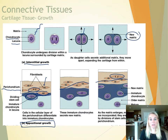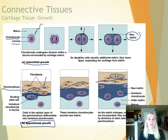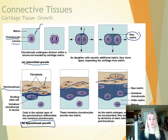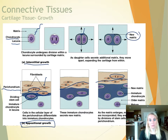Cartilage growth mainly occurs in utero and during childhood development. Once you reach adult maturity around 18 to 20, this growth stops. As an adult, you have the cartilage you'll always have — if you damage it, there's very limited repair or only surgical repair. So take care of your cartilages because you can't really grow them back.